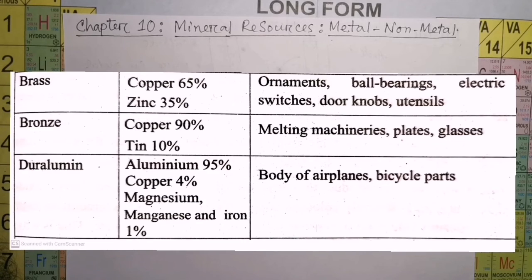Then brass: Copper 65%, Zinc 35%. Ornaments, ball bearings, electric switches, doorknobs, utensils. Bronze: Copper 90%, Tin 10%. Melting machineries, plates, glasses.